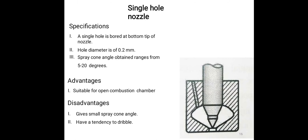Single hole nozzle. Specifications: single hole nozzle bore at bottom tip of nozzle hole 0.2mm. Spray angle obtained range from 5 to 20 degree. Advantage: suitable for open combustion chamber. Disadvantages: small spray cone angle have a tendency to dribble.